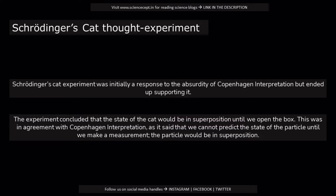Schrödinger's Cat experiment was initially a response to the absurdity of the Copenhagen interpretation, but ended up supporting it. The experiment concluded that the state of the cat would be in superposition until we open the box. This was in agreement with the Copenhagen interpretation, as it said that we cannot predict the state of the particle until we make a measurement — the particle would be in superposition.